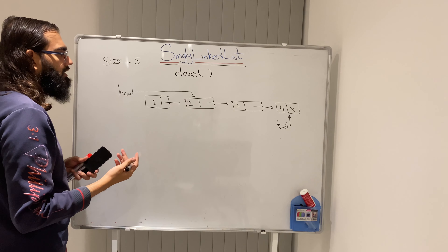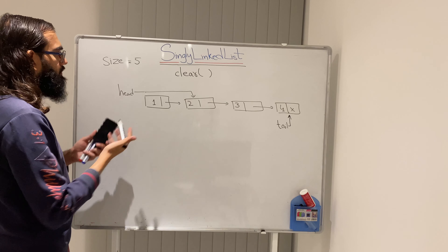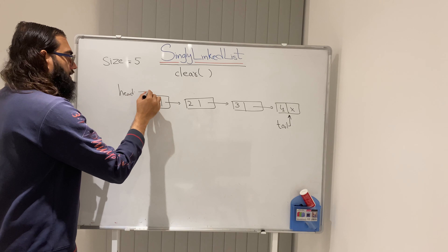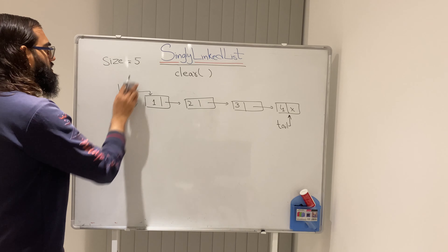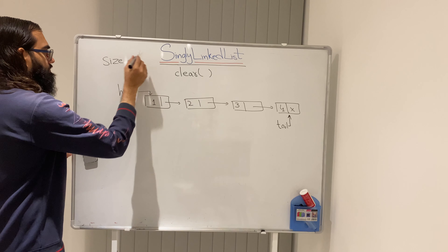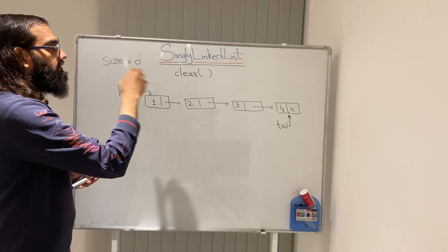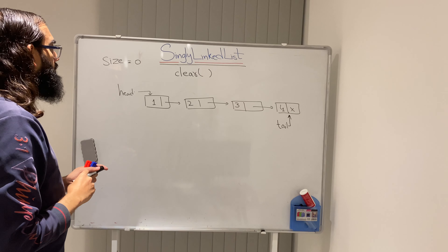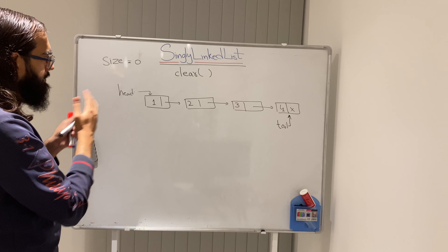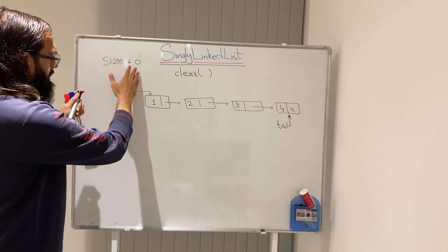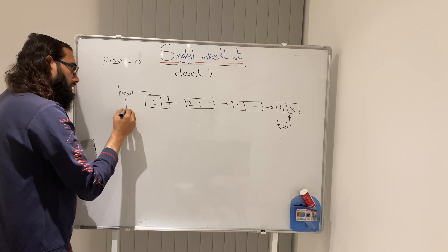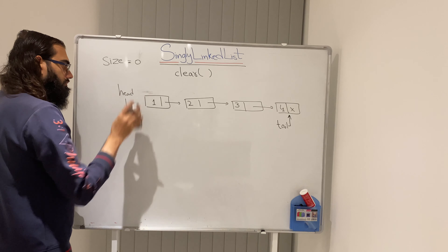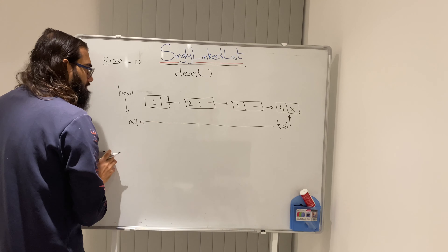We are not using any extra space. Now the optimized approach — what we did is say: set size equal to zero, then head equal to null, which removes the connection to the first node, then tail equal to null, which removes the remaining connection. Note that this implementation does not handle concurrent modifications — we already discussed that in a different video, so for a properly synchronized single-threaded use case this is fine. Once head and tail are null and size is zero, this is an O(1) clear operation.